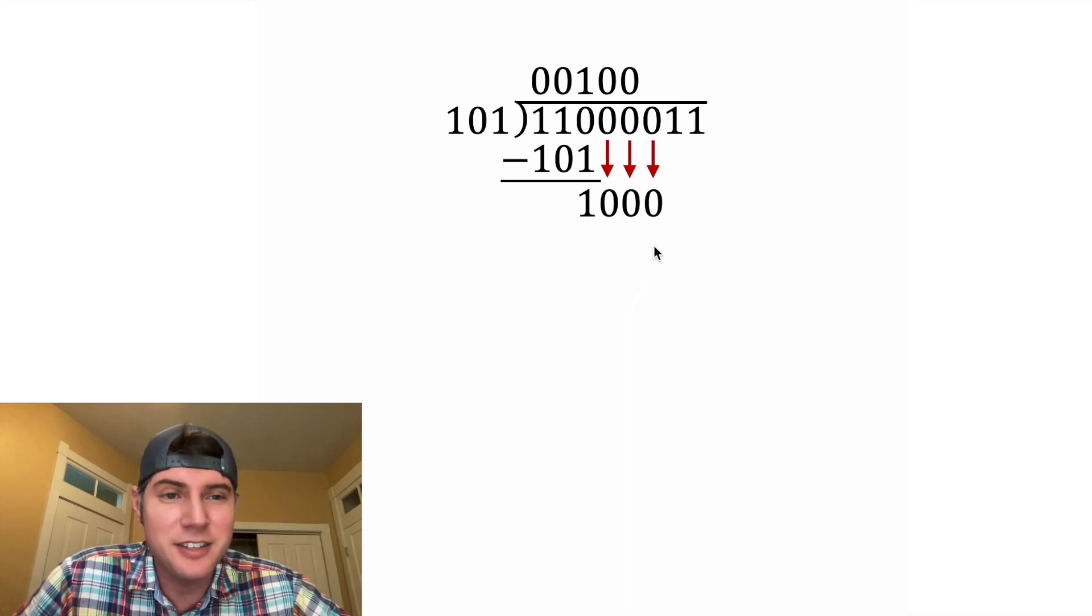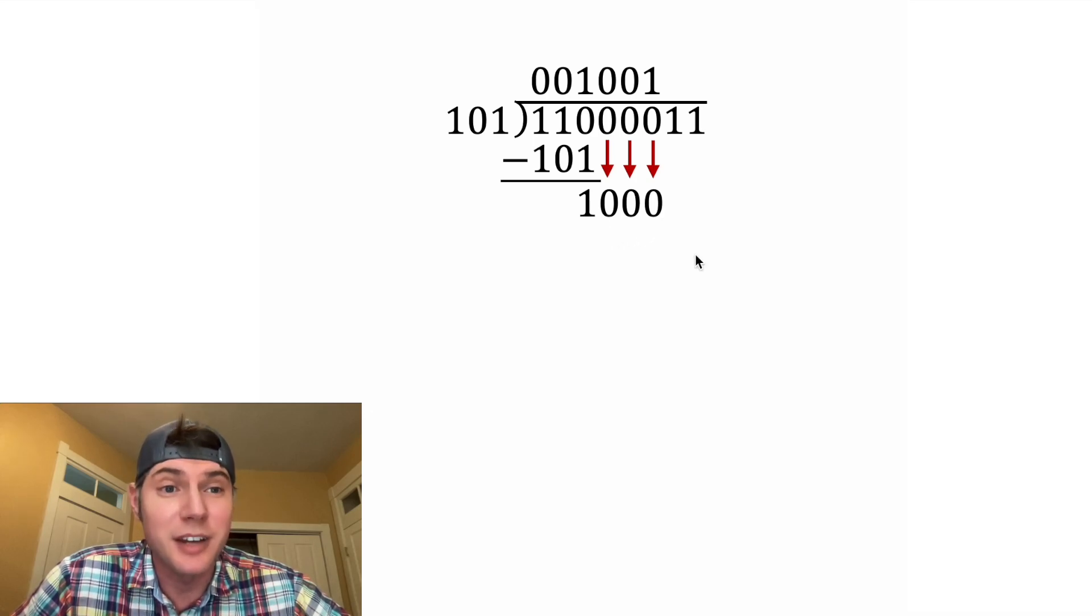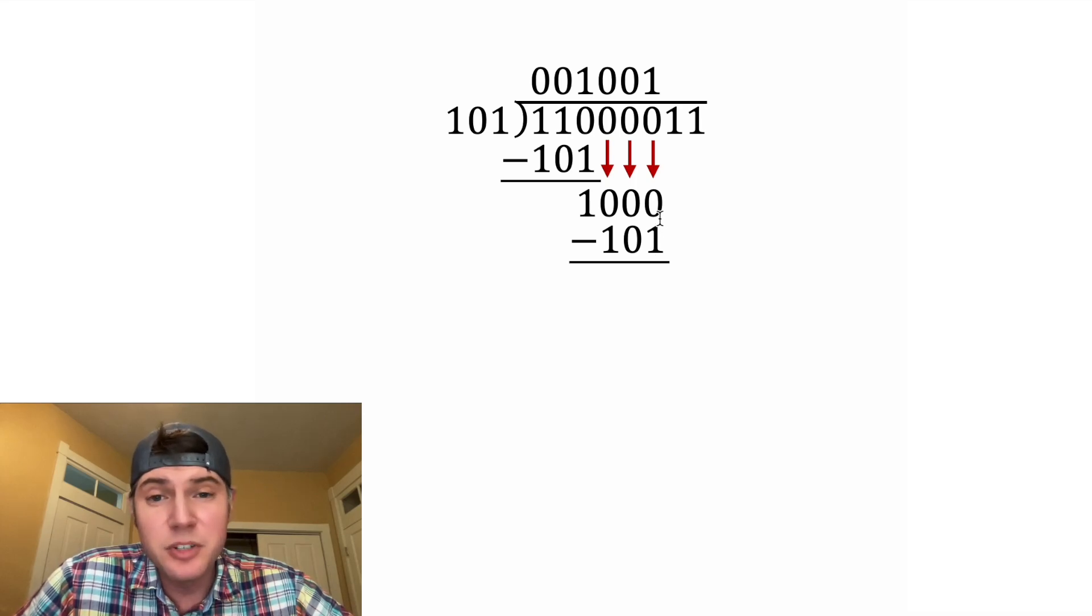So now let's bring down the next 0. How many times does 101 go into 1000? Well, that's going to be 1 time. Then we multiply 1 times that and subtract them. So we can't do 0 minus 1, and we can't borrow from these 0s, so we have to borrow from this 1. That's going to make the next term over a 2. Then we can borrow from this 2, make it a 1, and make this a 2.